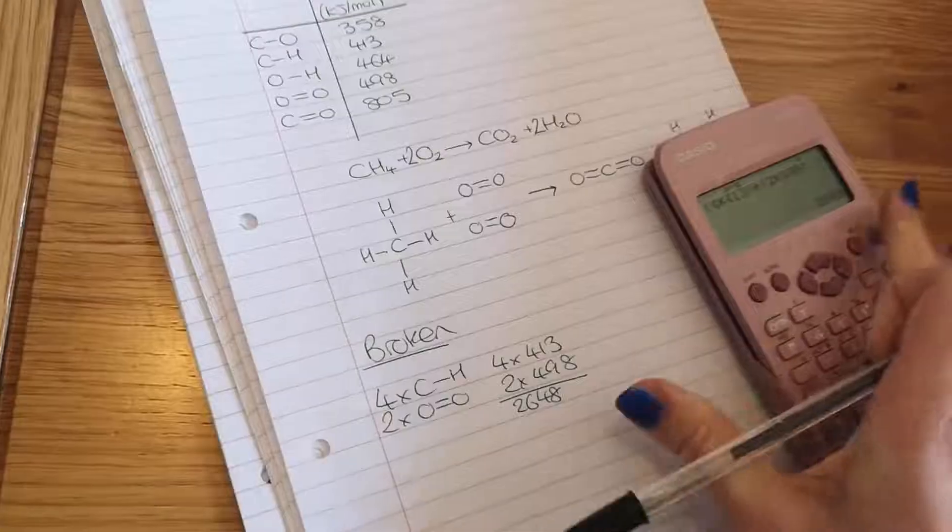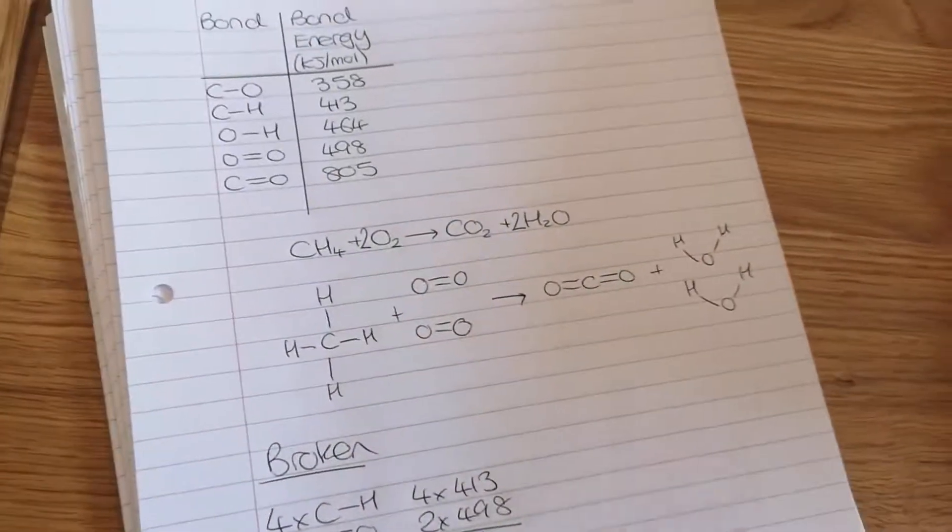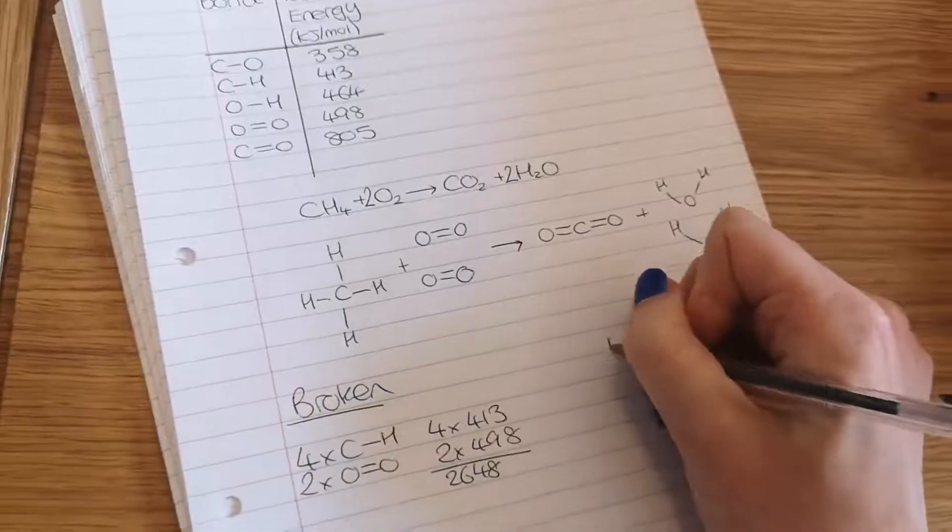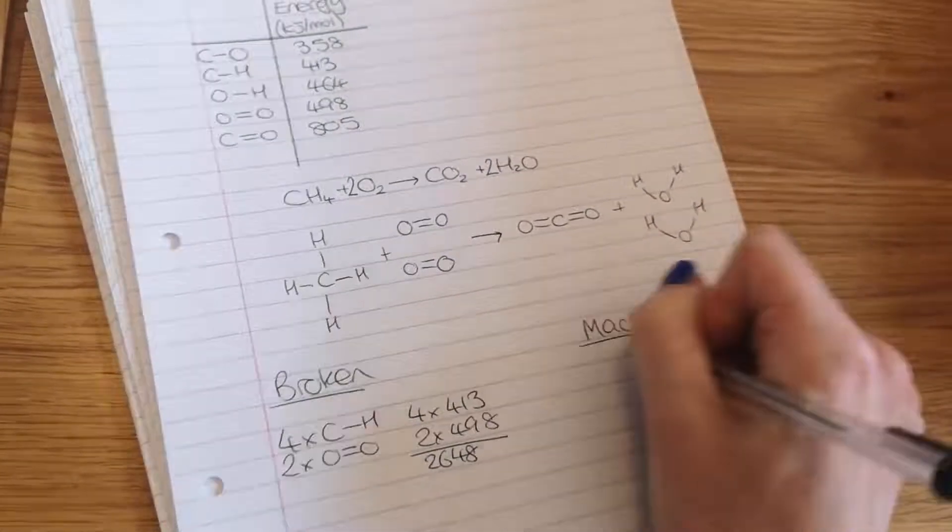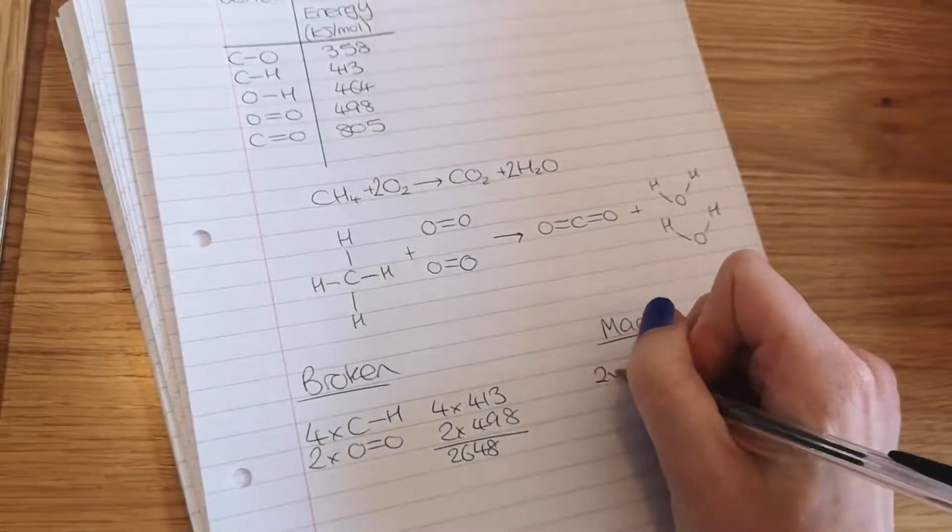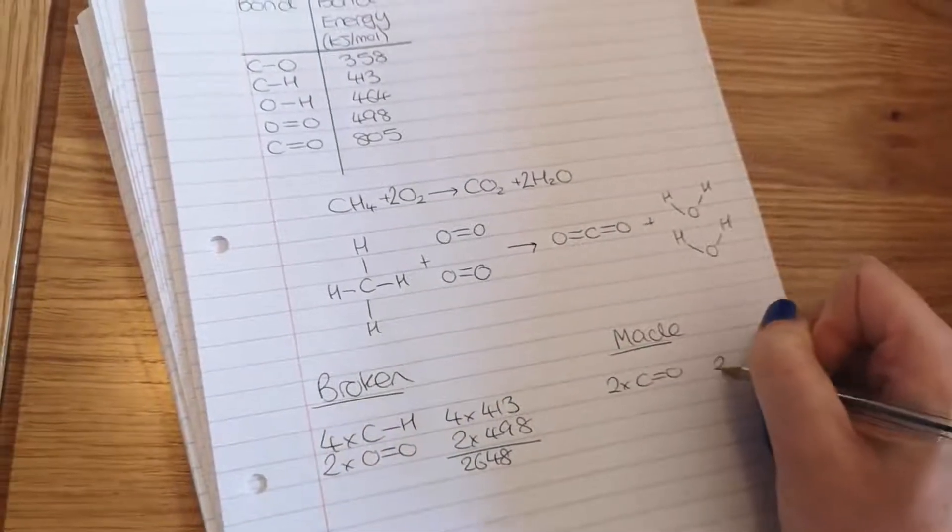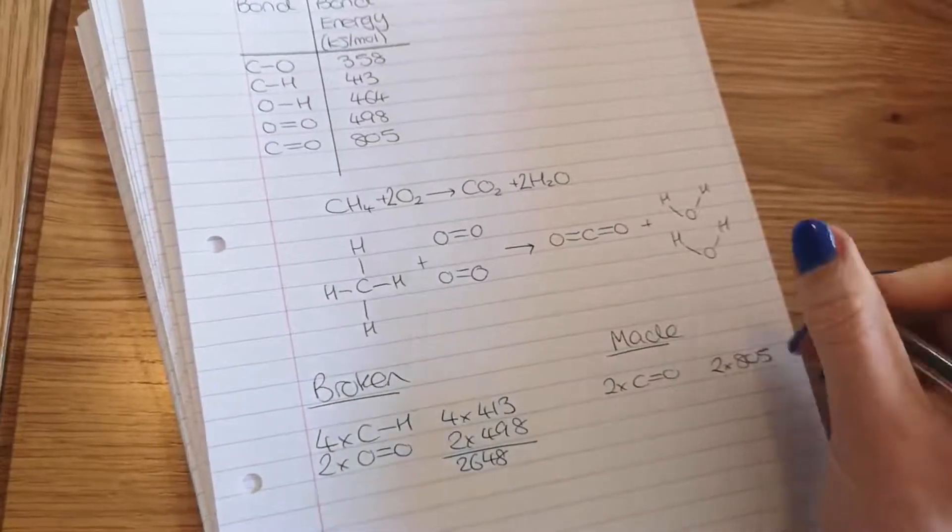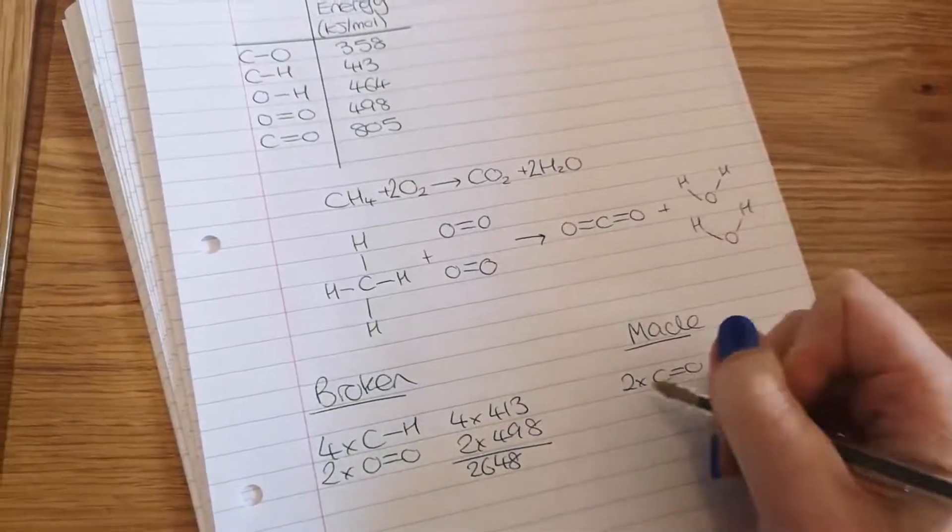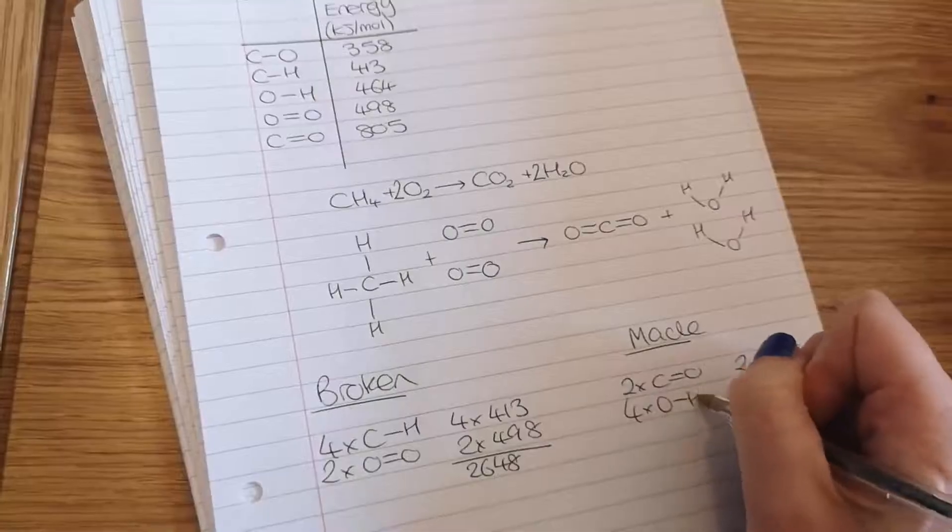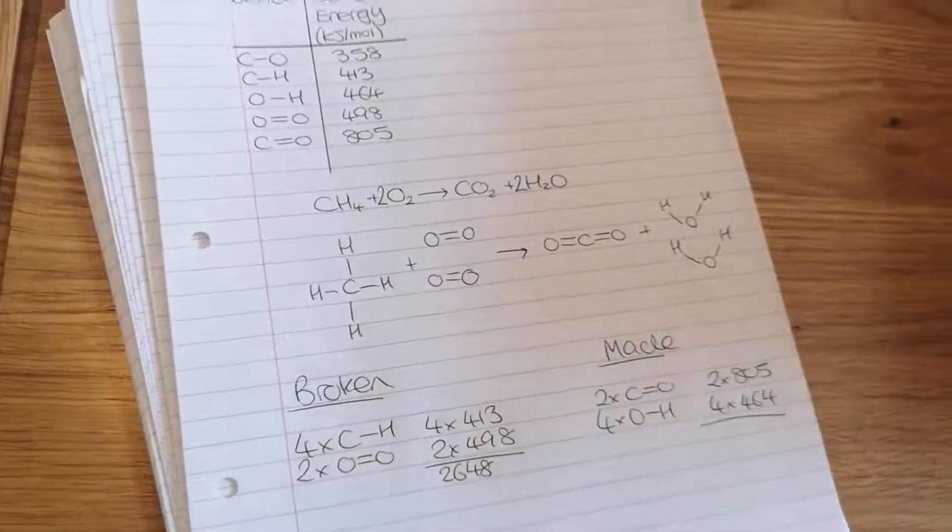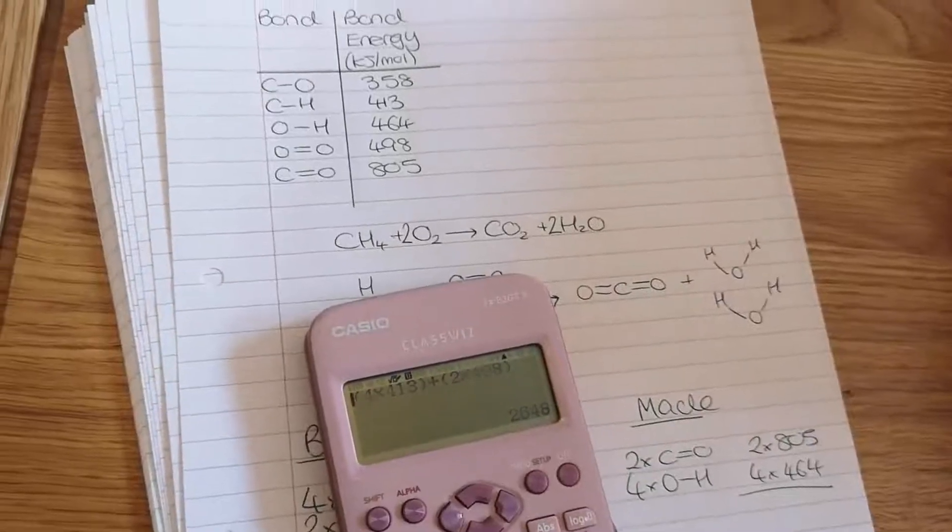2648. I'm gonna do the same thing on the other side with these ones here and work out which bonds have been made. So I've got two of these C double bond O's and I've got four of these OH bonds - one, two, three, four - so I want to add those up.